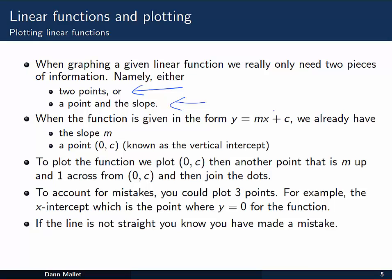When we have a function, a linear function y, given in this mx + c form, we already have one of those sets of information. The slope and also the point (0,c), which is known as the vertical, in this case the y intercept. So we've got this point slope information and we'd be able to plot that graph quite easily.